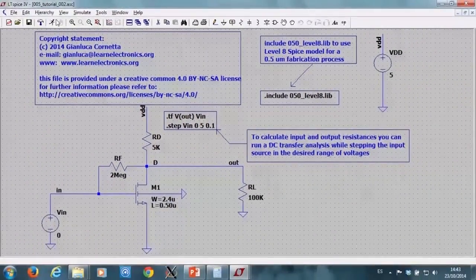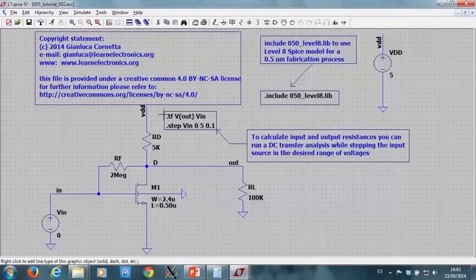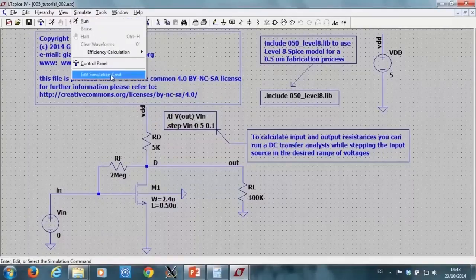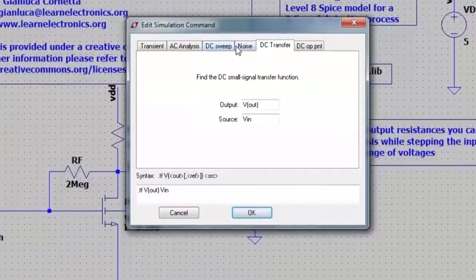To configure the dot TF analysis, I go to simulate, edit simulation command, and select DC transfer, by specifying the output node and source voltage.